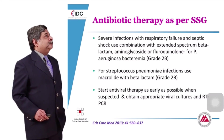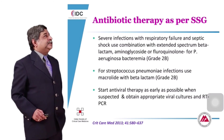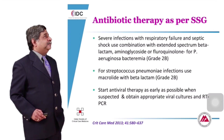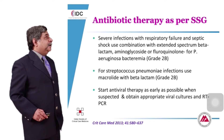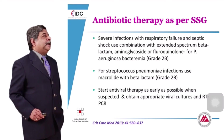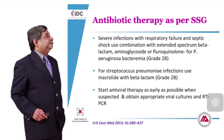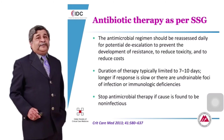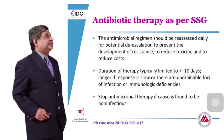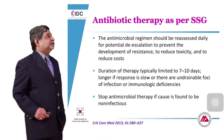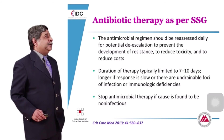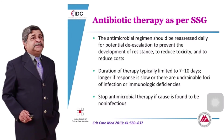For patients with severe infections with respiratory failure and septic shock, use a combination with extended-spectrum beta-lactam plus aminoglycoside or fluoroquinolone. For Pseudomonas bacteremia, the same principle applies. For Streptococcus pneumoniae infections, use a macrolide with a beta-lactam. Start antiviral therapy as soon as possible when suspected. The antimicrobial regimen should be reassessed after a few days — de-escalation is critical to reduce toxicity, resistance development, and cost. Duration is typically 7 days; if non-infectious cause is found, stop antibiotic therapy.